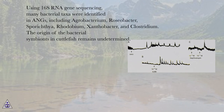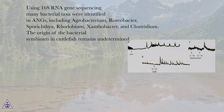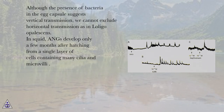Using 16S RNA gene sequencing, many bacterial taxa were identified in AGs, including Agrobacterium, Roseobacter, Spothia, Rhodobium, Xanthobacter, and Clostridium. The origin of the bacterial symbionts in cuttlefish remains undetermined. Although the presence of bacteria in the egg capsule suggests vertical transmission, we cannot exclude horizontal transmission as in the legal obolescence.